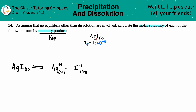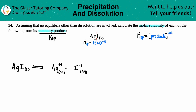The general KSP equation is just equal to the concentration of the products raised to their coefficients. No reactants are allowed because they're always going to be solids for KSP. So KSP equals the concentration of Ag⁺ times I⁻. We raise each to their coefficients, but for both of these there was no coefficient in the front, which just means you have one of each. So you raise both to the first power, but anything raised to the first power is itself.